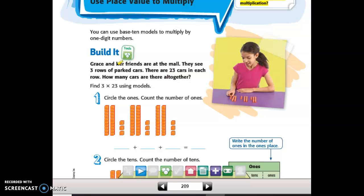So in this example, Grace and her friends are at the mall. They see three rows of parked cars. There are 23 cars in each row. How many cars are there altogether?